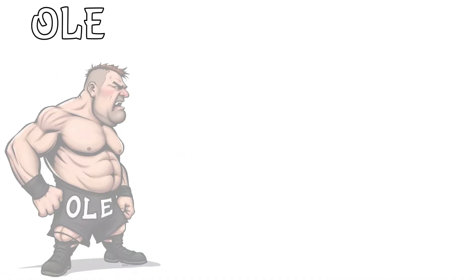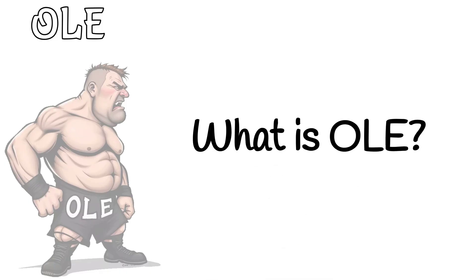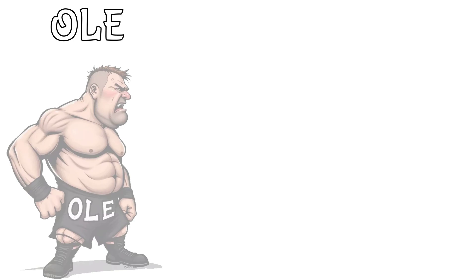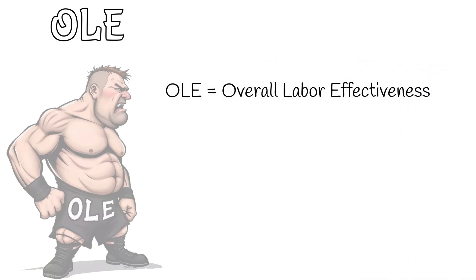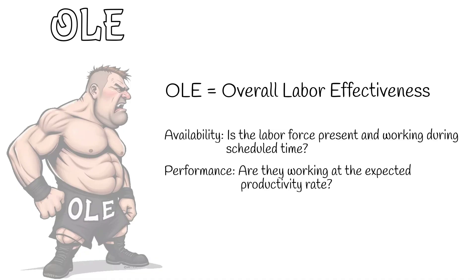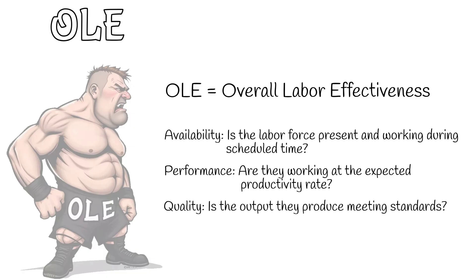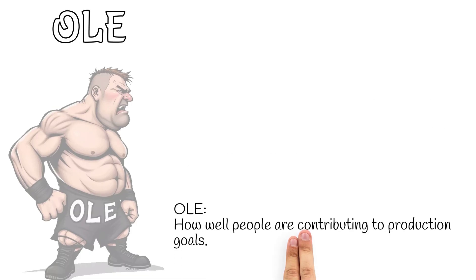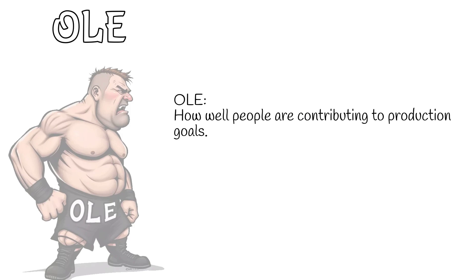Part 2: What is OLE? Now let's move to OLE — Overall Labor Effectiveness. Instead of looking at equipment, OLE measures how effectively your workforce is performing. It also uses three factors, but with a human focus: Availability — is the labour force present and working during scheduled time? Performance — are they working at the expected productivity rate? Quality — is the output they produce meeting standards? OLE gives us insight into how well people are contributing to production goals, factoring in things like absenteeism, training gaps, and skill utilisation.